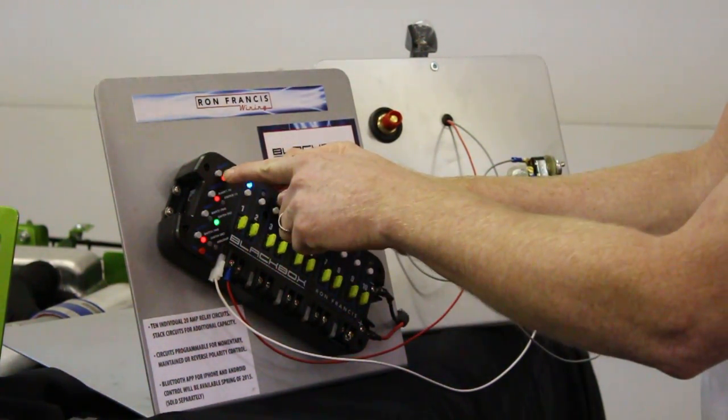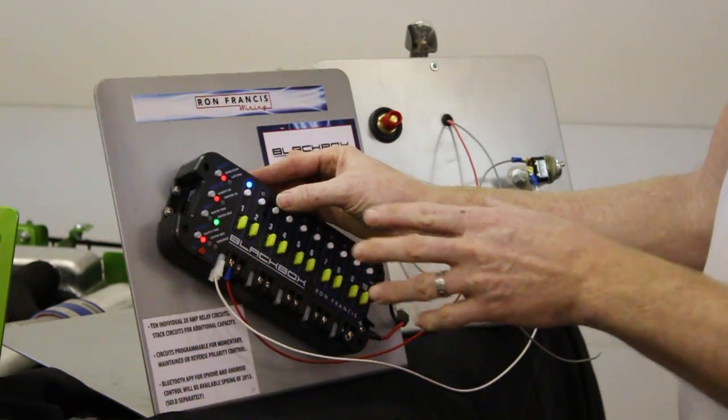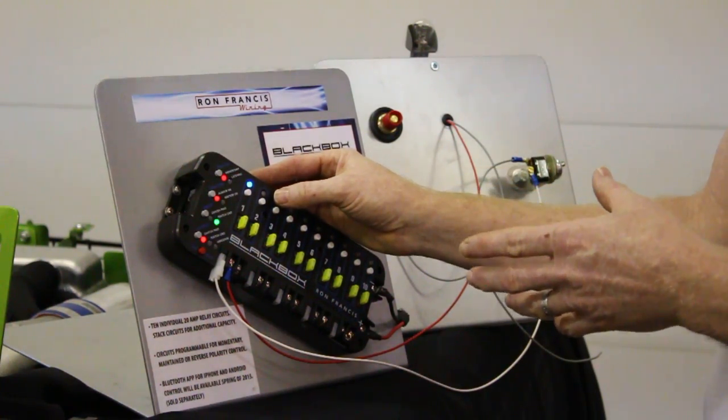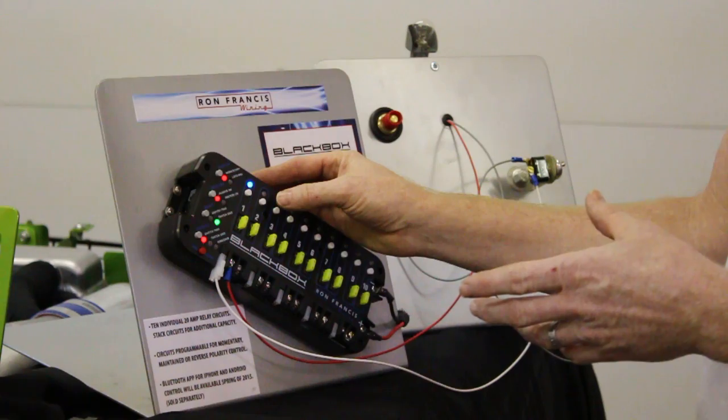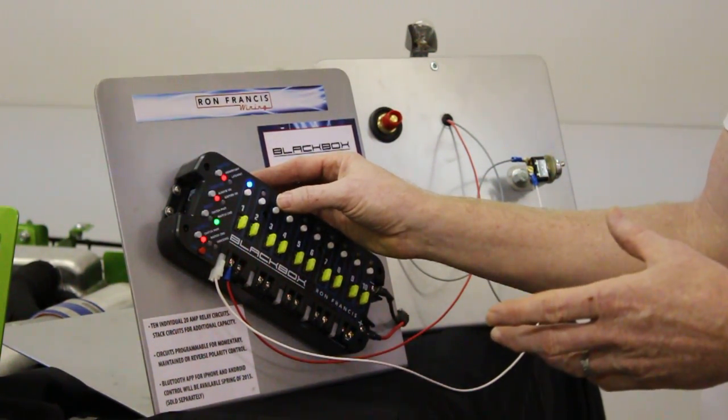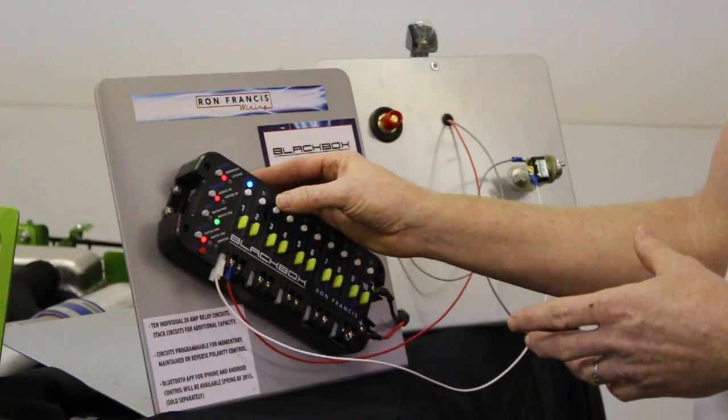So this particular circuit is set up for momentary, always on, meaning that you don't have to start the black box with the ignition for that particular circuit for it to operate. It's on battery, so even if you have your ignition off, it will be able to be controlled and operate.